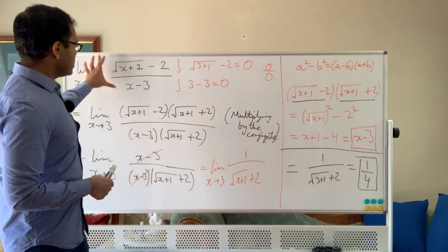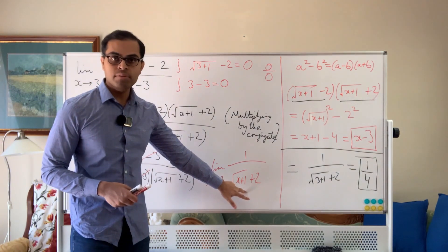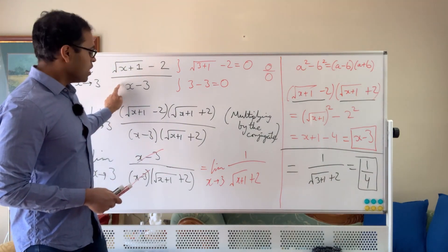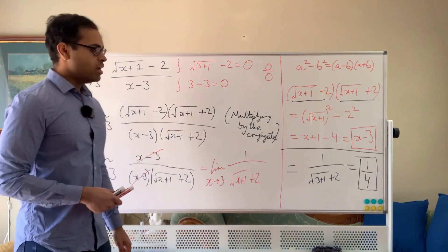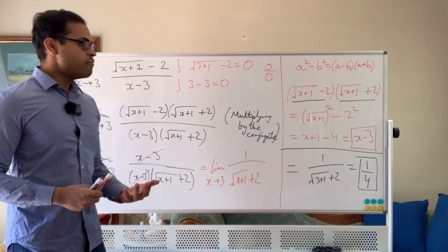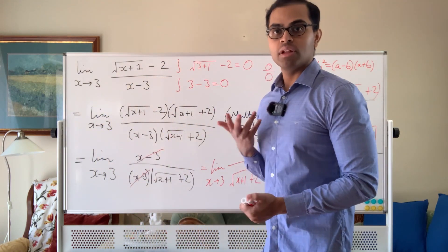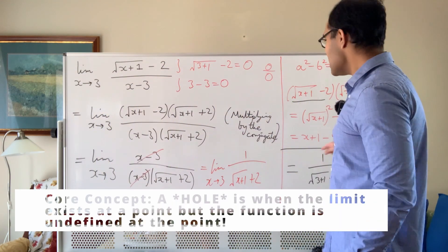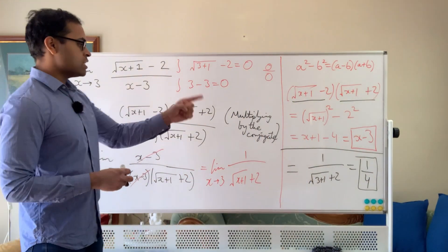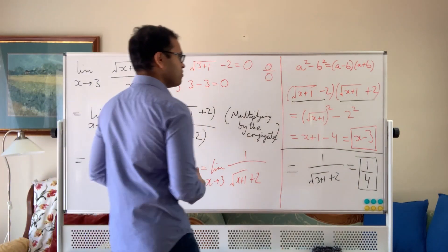The function we started with is the same as the simplified function 1 over root x plus 1 plus 2, as long as x is not equal to 3, because the original function is undefined at x equals 3 while the simplified one is defined there. They're the same as long as x is not 3. That one-fourth is the limit. If you were to graph it, there would be a hole at x equals 3 — a hole is when the limit exists but the function is undefined at the point.